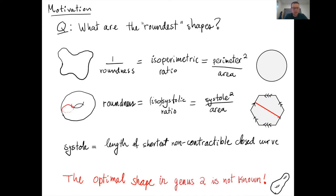What if you want to generalize this problem to other surfaces besides planar domains — for example, closed surfaces that may not have any boundary at all? You need to replace the perimeter by another one-dimensional measurement on the surface. I'm going to choose to work with the systole, which is defined as the length of the shortest non-contractible closed curve in the surface. A shortest non-contractible closed curve is necessarily a closed geodesic, but the converse is false.